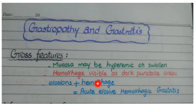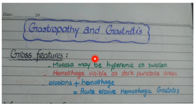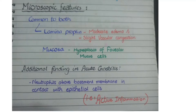Sometimes the damage in gastropathy and gastritis is severe enough to cause hemorrhages from the mucosa, visible as dark punctate areas. If erosions and hemorrhages occur simultaneously, we call this condition acute erosive hemorrhagic gastritis. So on gross specimen you may see hyperemic or swollen mucosa, hemorrhagic dark punctate areas, or erosions plus hemorrhage — the latter called acute erosive hemorrhagic gastritis.